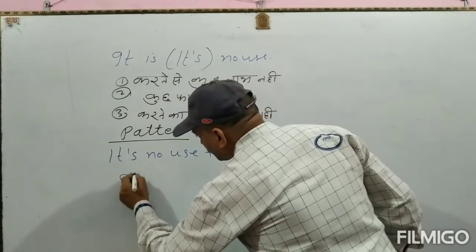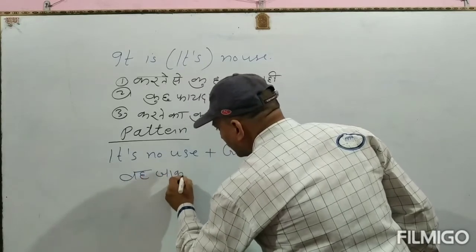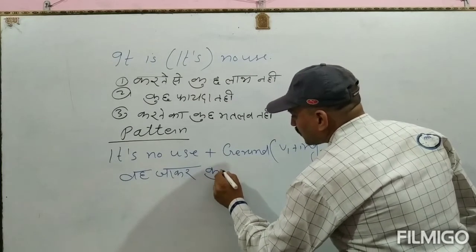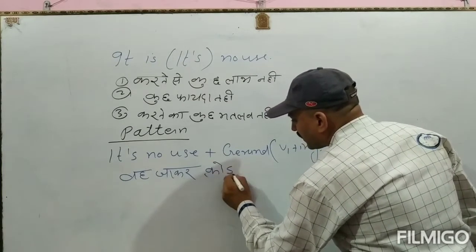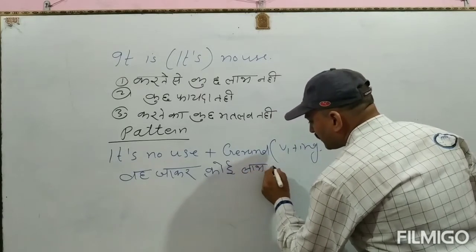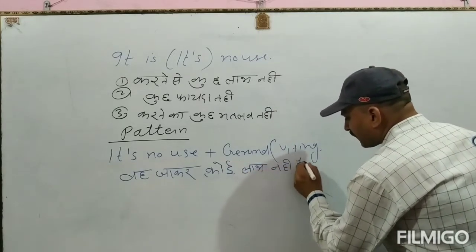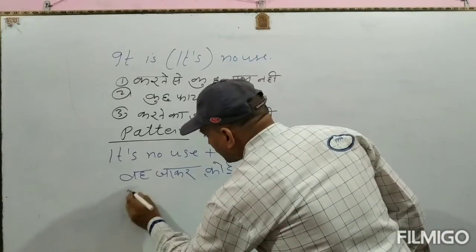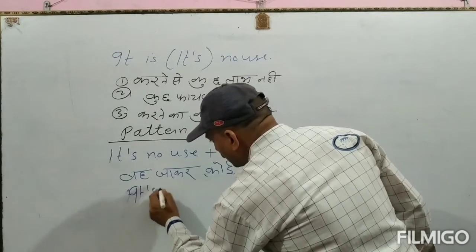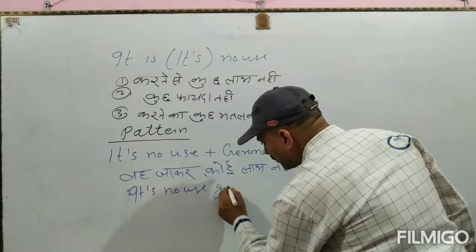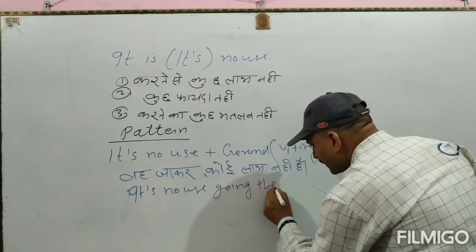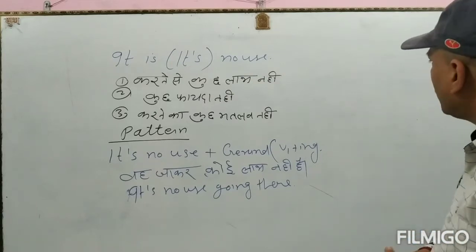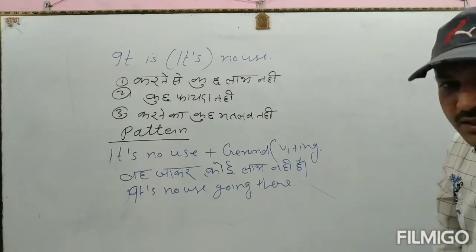जैसे — वहाँ जाकर कोई लाभ नहीं है। तो आप कहेंगे: 'It's no use going there.' देखिए कैसे बना — It's + no + use + going + there। यह structure बहुत simple है भाई।